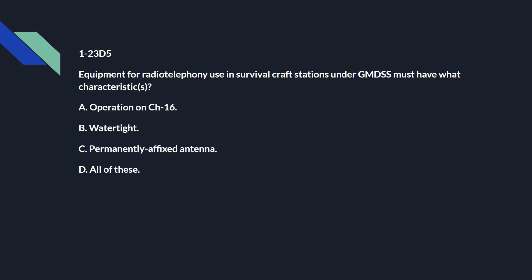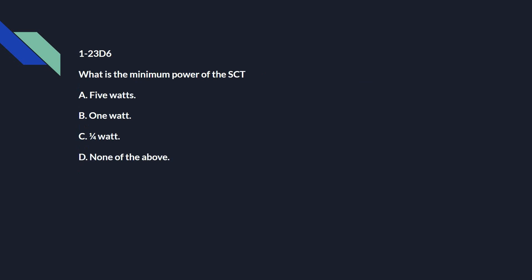1-23 Delta 5: Equipment for radio telephony use in survival craft stations under GMDSS must have what characteristic? And that's all of the above: operation on channel 16, it also needs to be watertight, and permanently affixed antenna. 1-23 Delta 6: What is the minimum power of the SCT? And that's B: 1 watt.